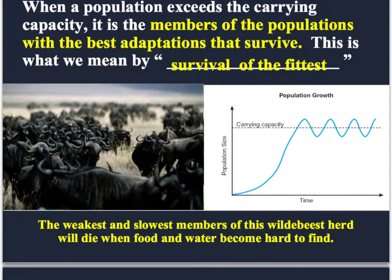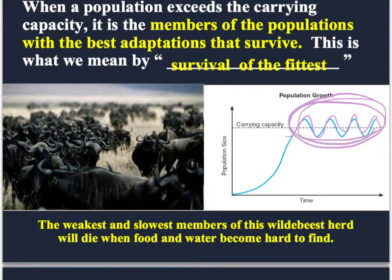Going back to the carrying capacity graph — when the population gets bigger than the carrying capacity and resources run short, the ones that survive are going to be the ones with the best adaptations. When a population exceeds the carrying capacity, only the members with the best adaptations will live — the ones with that edge and extra ability. This is what the term 'survival of the fittest' means: having the adaptations necessary to allow you to keep living.